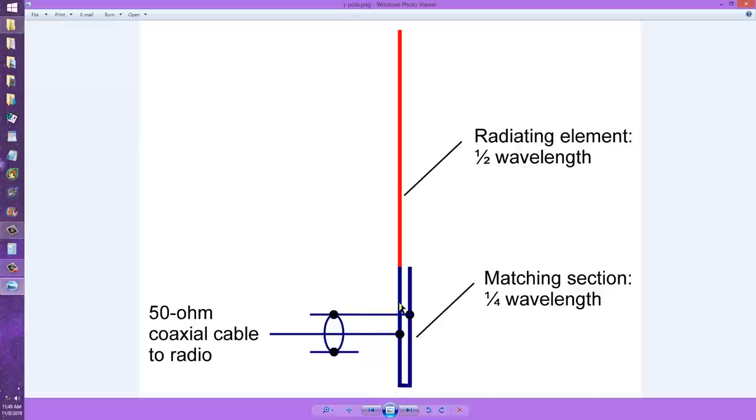That can range from 0 ohms up to, what did I say, 2,000 ohms? So somewhere there exists a point along this matching section where there is a purely resistive impedance of 50 ohms. It's probably closer to the bottom than I've shown here, but in any case, that point does exist. You find that point simply by using a standing wave ratio meter until you get a 1 to 1 SWR on your 50-ohm coaxial cable.